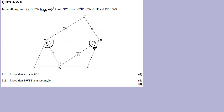PW is parallel to ST, and PT is parallel to WS. But this parallelogram PQRS - we don't know if it could also be a rectangle. We don't know, so we can't assume. But these are opposite sides, and since it's a parallelogram, the opposite sides are parallel as well.